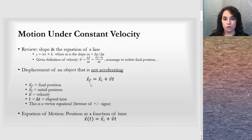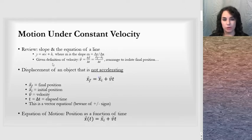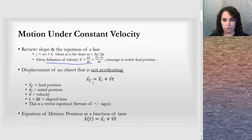So the position will be the initial position plus any distance you moved at that constant velocity, represented by vt. This equation can easily be derived by the definition of velocity. If you rearrange this equation, you can get the second equation: the final position equals the initial plus vt.